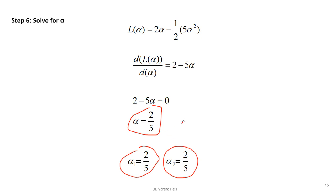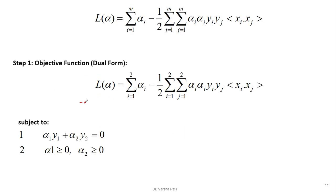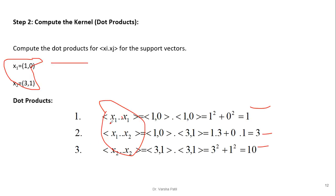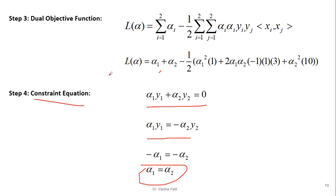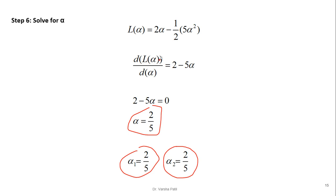To summarize the solution steps: first, write the dual objective function; second, compute the kernel — in this case, the dot products of support vectors; third, solve the dual objective; fourth, apply the constraint equation to find that alpha_1 = alpha_2; fifth, replace both with alpha; sixth, take the derivative, equate to zero, and solve to find alpha_1 = alpha_2 = 2/5.